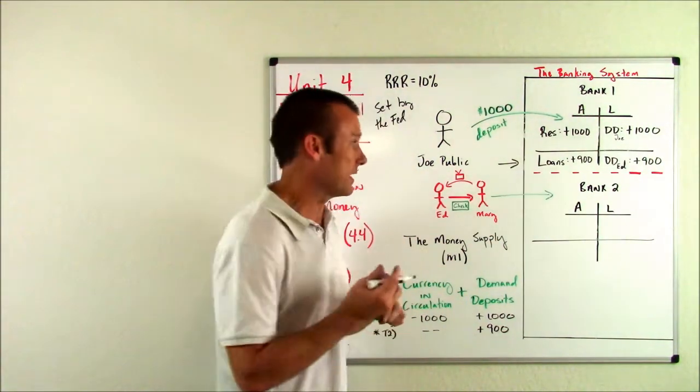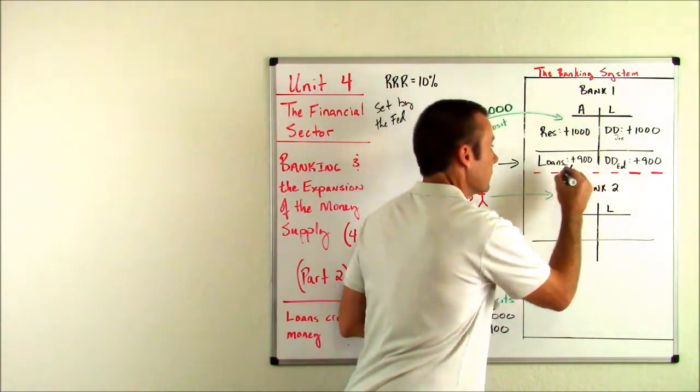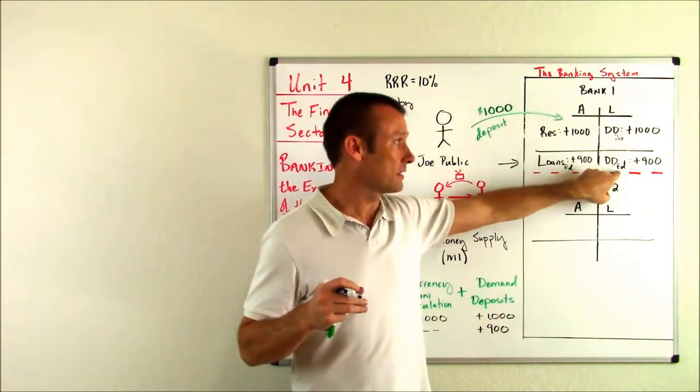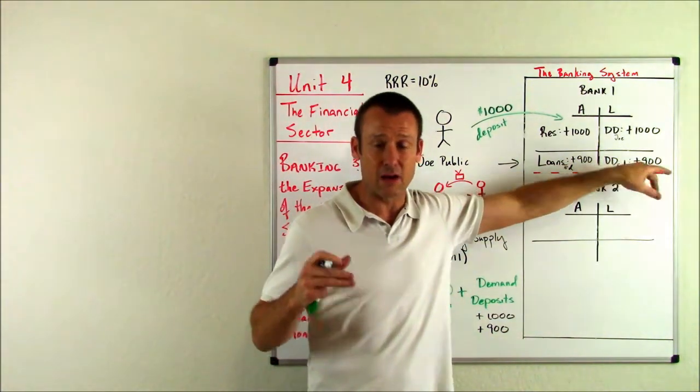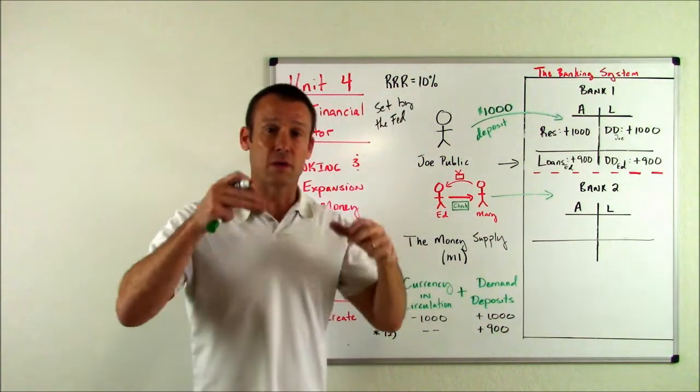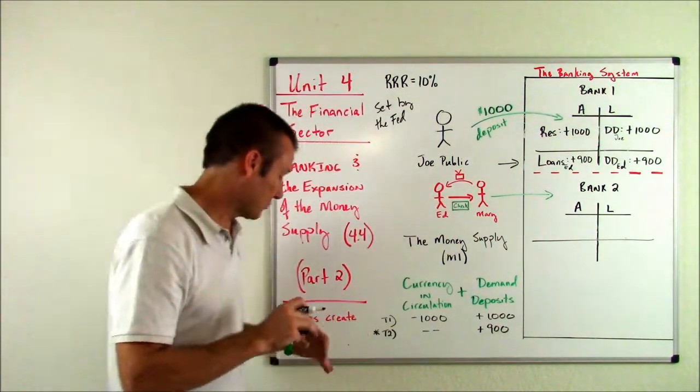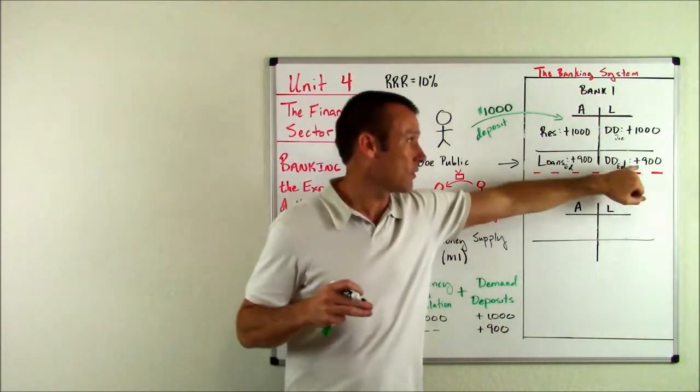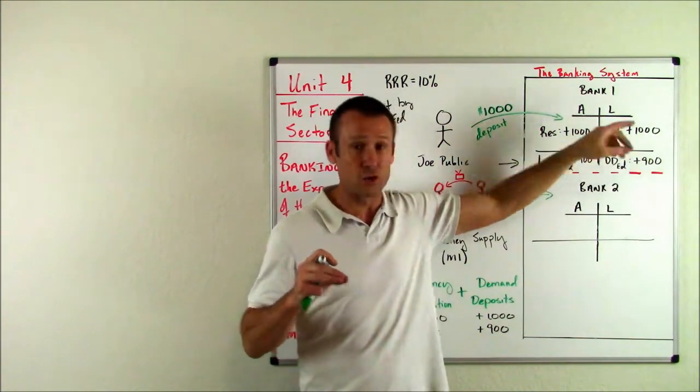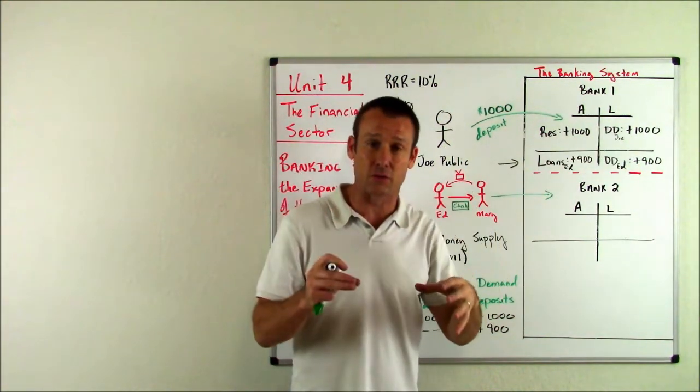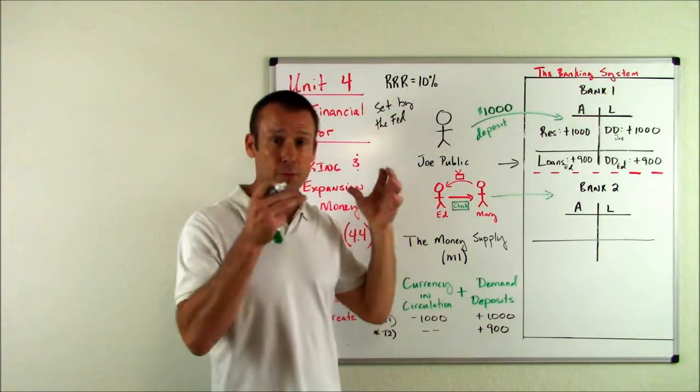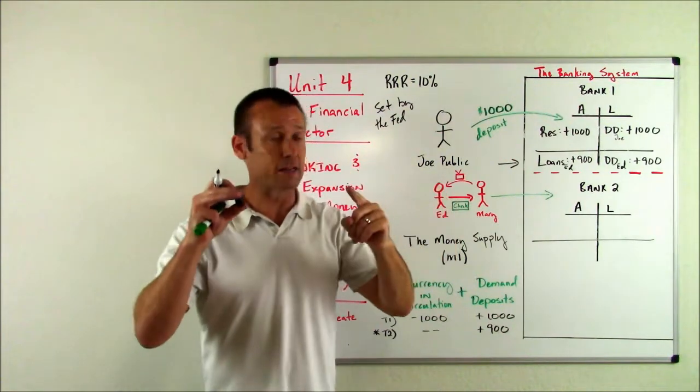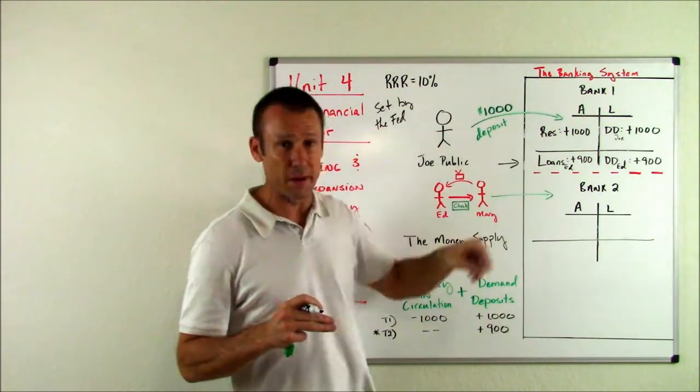They made a loan to Ed for $900 and Ed saw his checking account be credited by $900 when he took out that loan and that loan expanded the money supply. That's right, loans create money. When Ed got that loan, he can now go buy $900 of goods and services. And Joe can still buy 1,000 of goods and services. So the money supply in this particular problem starting at 1,000 is now 1,900. The money supply expanded via the loan that bank one made.